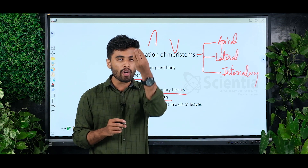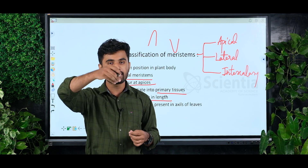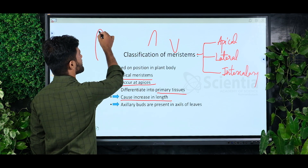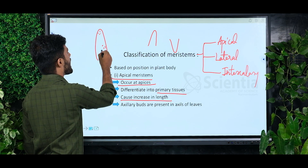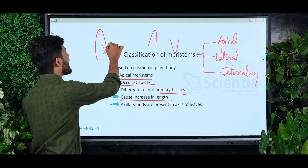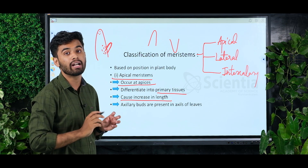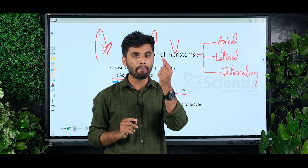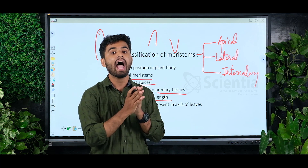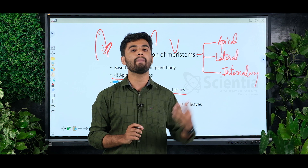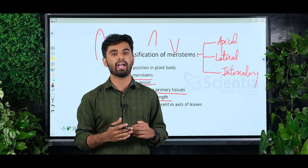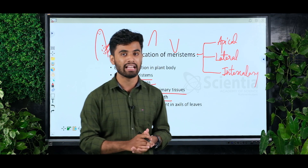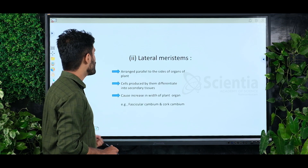The apical meristem leaves behind some cells as it advances. These cells are left behind at a certain place, and what do they form? They will form a bud — a lateral bud, called an axillary bud. These cells are left behind and they form axillary buds, which ultimately become branches.